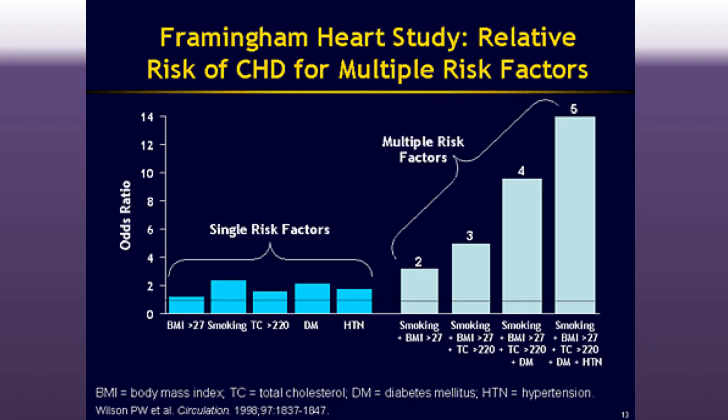The Framingham Heart Study was conducted in Framingham, Massachusetts with a set population studied over many, many years — it's been going on for well over 50 years. What they found is that if you look at individual risk factors — BMI over 27, whether or not people smoke, total cholesterol over 220, diabetes, and hypertension — each is slightly above an odds ratio of one. The black line represents one, which means essentially no effect. So each of those is a risk factor for heart disease, but most of them are not that great individually.